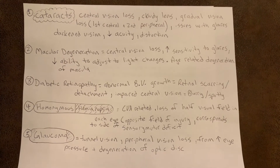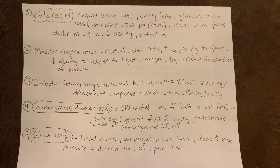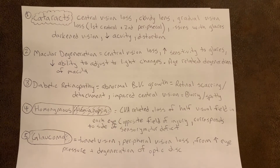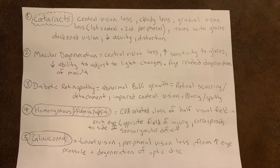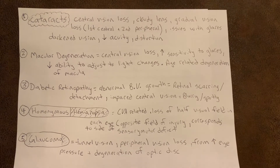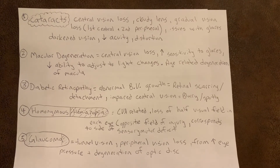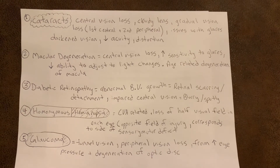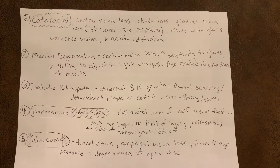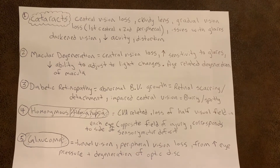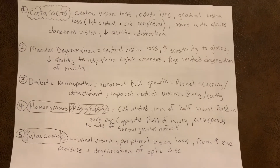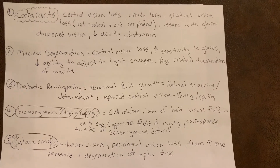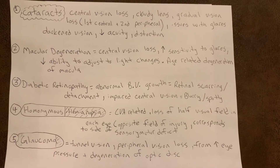The third type of vision loss is diabetic retinopathy. This is caused by abnormal blood vessel growth, which causes retinal scarring and detachment. Diabetic retinopathy results in impaired central vision that is blurry or spotty — almost like ink blots blocking the visual field.